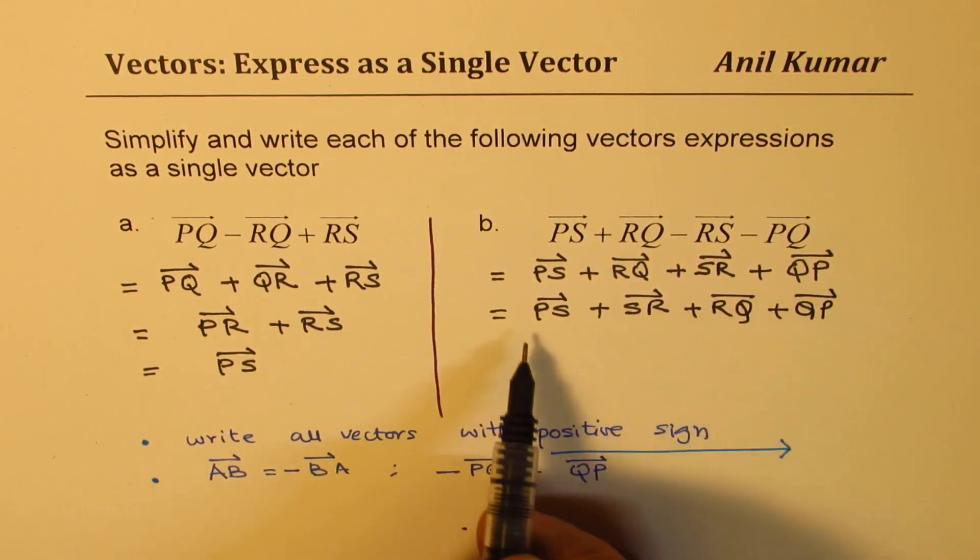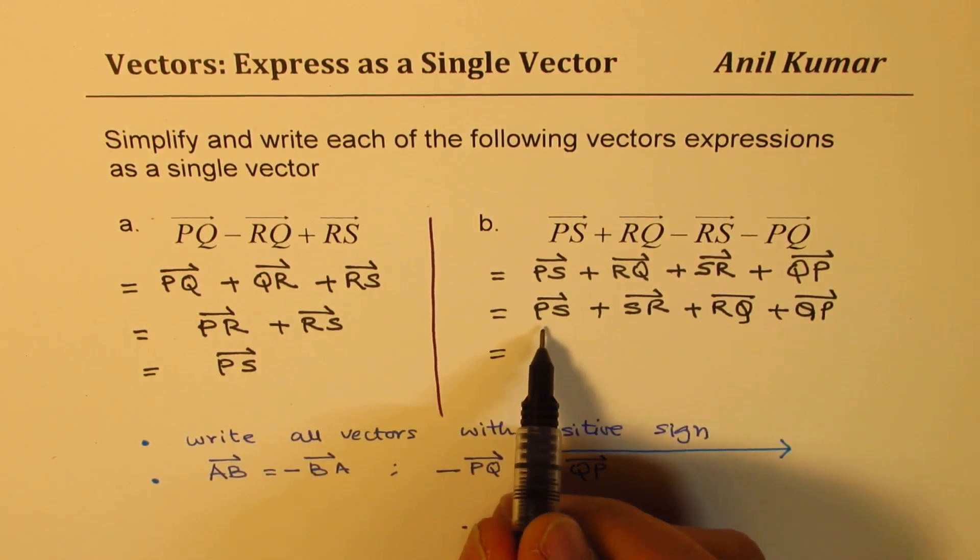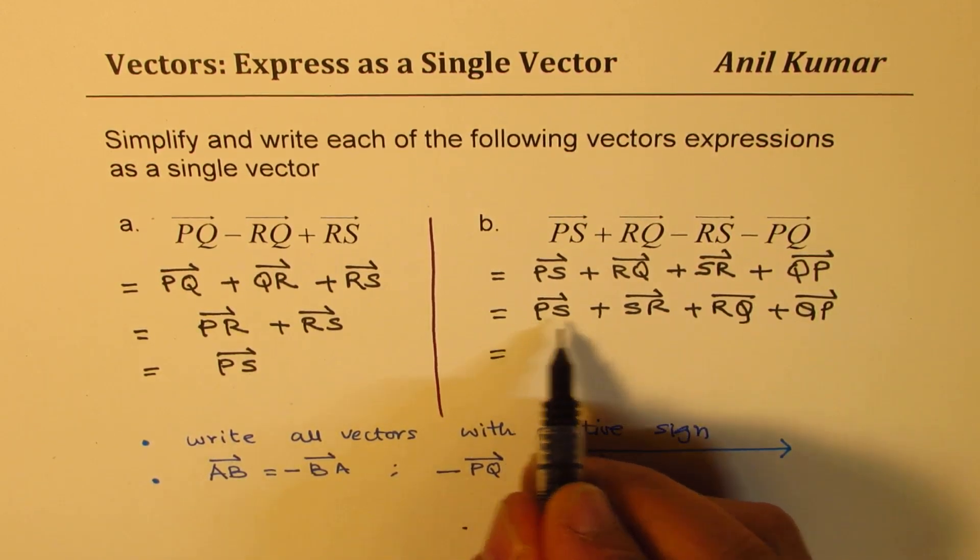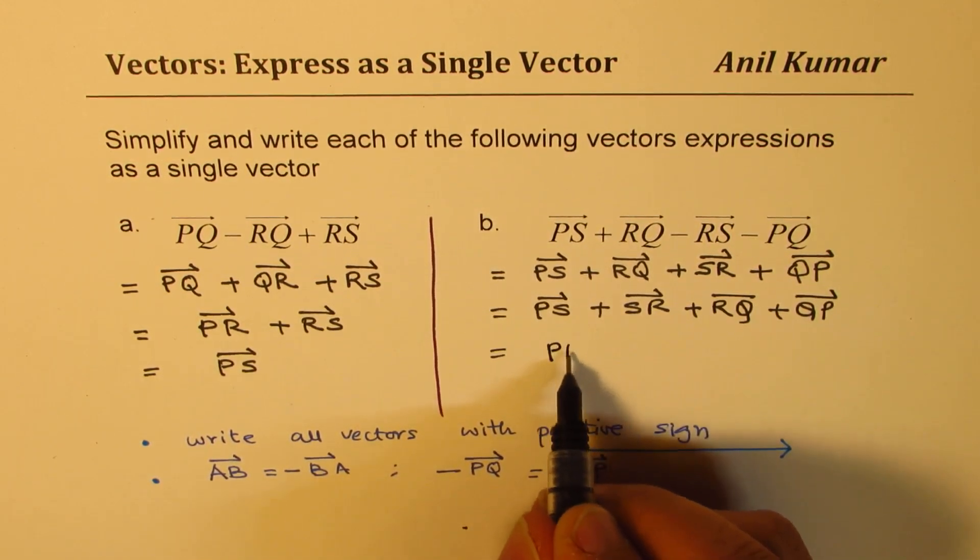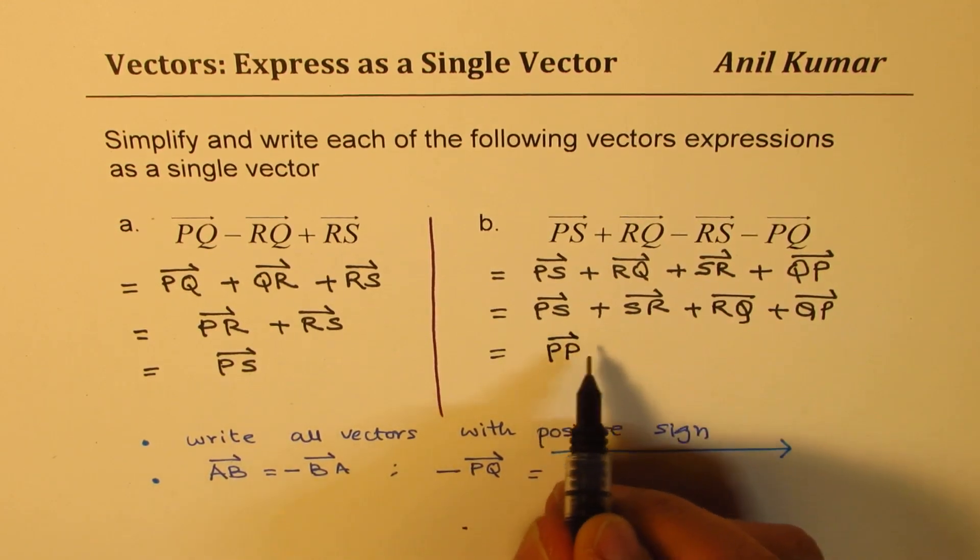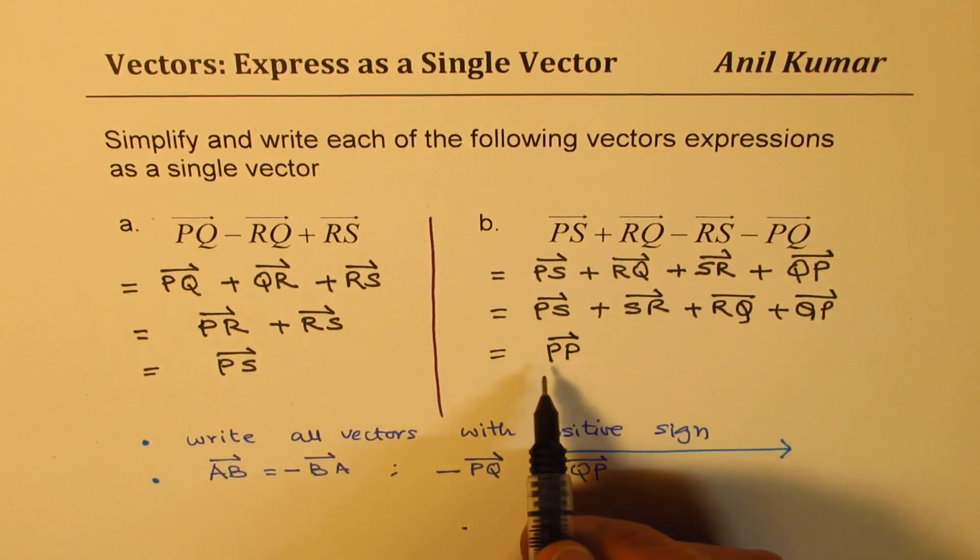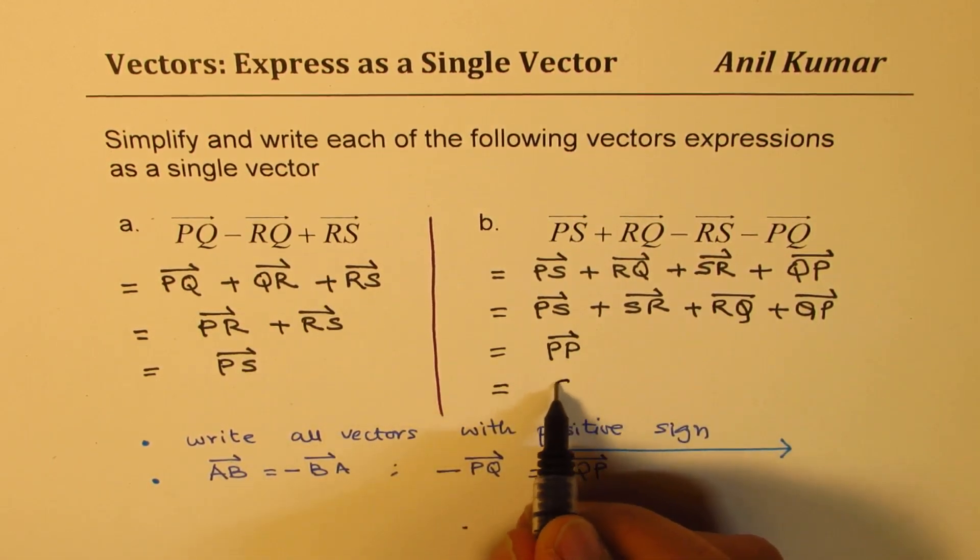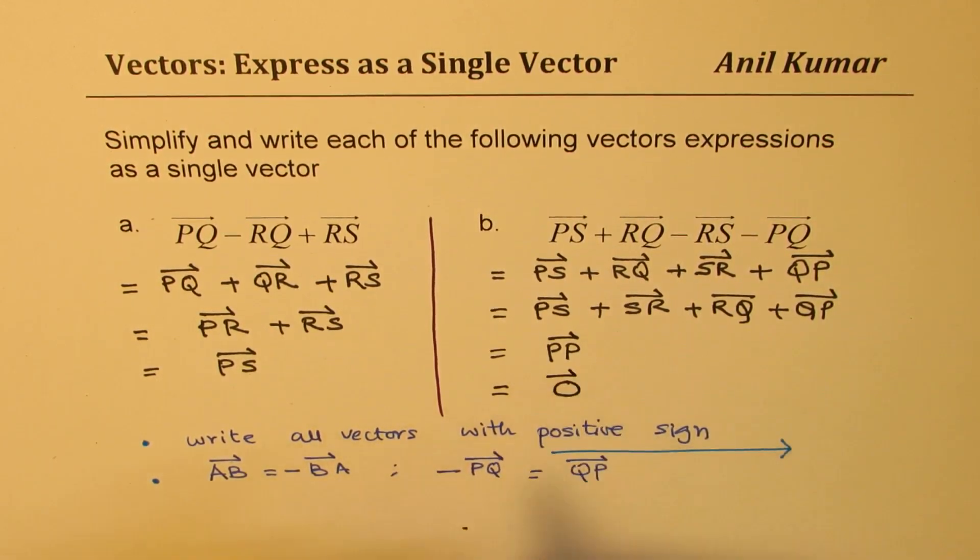So as you can see, from P, we land at P, back to P. So from P, we are coming back to the vector P. So you start from a point and you're back at the same point. This really means that the result is a zero vector. You have to write zero vector as your answer. You landed up just at the point from where you started.